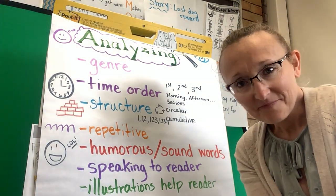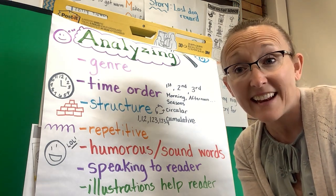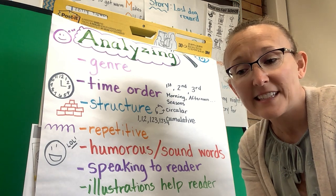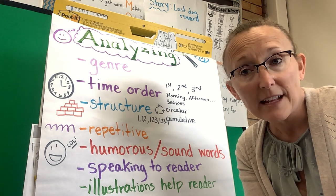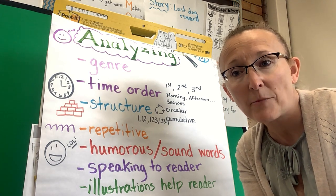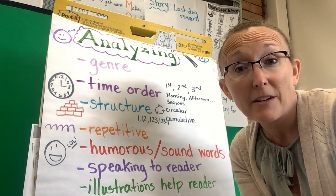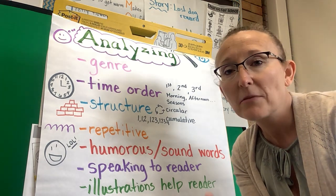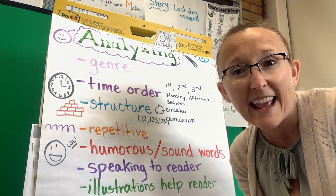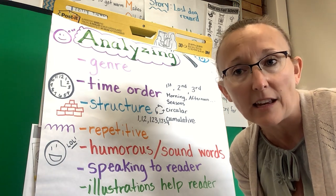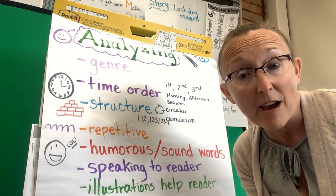Hi boys and girls. Today we are going to take all this great information we've learned about analyzing text and see how much of it we can use to analyze a book. I'm going to read aloud the book, and when I'm done I'm going to talk about some things I noticed on this chart of different ways to analyze text. You'll be able to see how, now that I've learned all these different things, I can really look at a story and analyze it — I know how to look closely, I know what to look for, and I know how to think about the story in different ways.